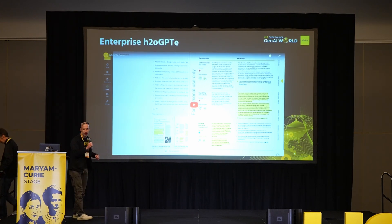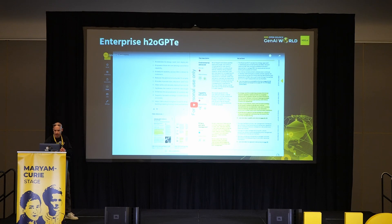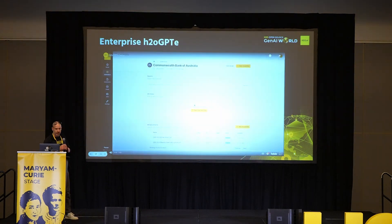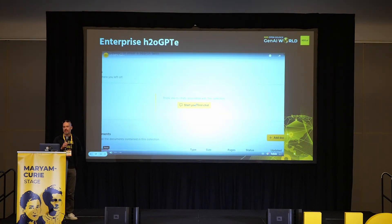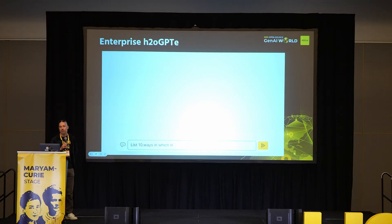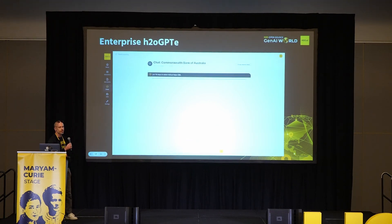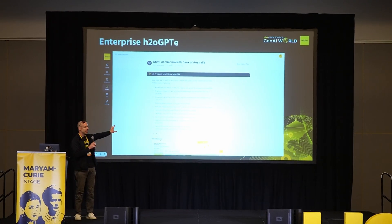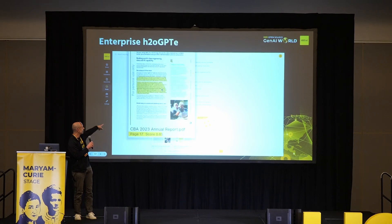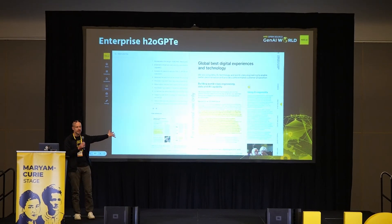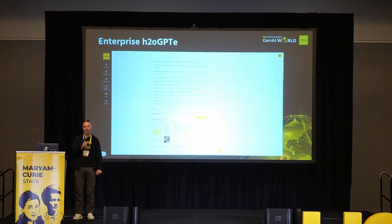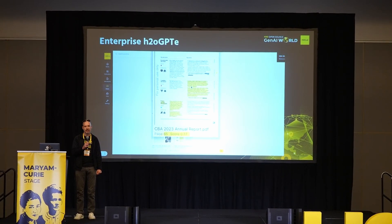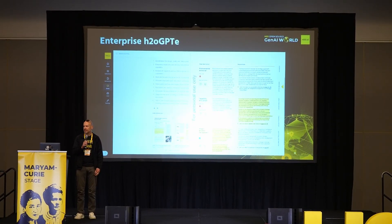Thanks, John. Excuse my voice — I'm still a little bit ill. The enterprise edition of H2O GPT is really built on top of H2O GPT open source. It adds more of the enterprise kind of things like scalability, high availability, and so on. But RAG is the centerpiece. You have documents and it highlights nicely in yellow where the information was found. It gives you a score. So basically, it's RAG for the enterprise.